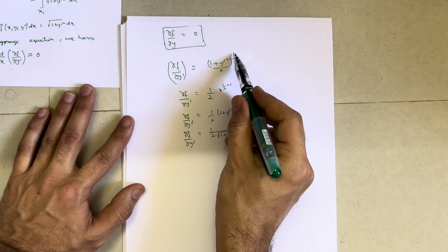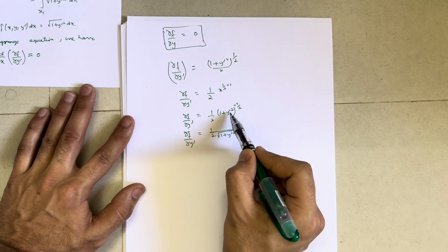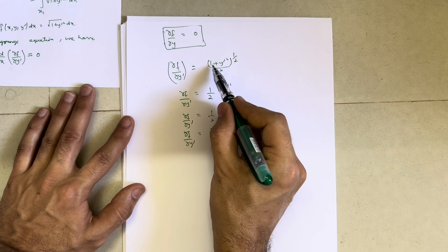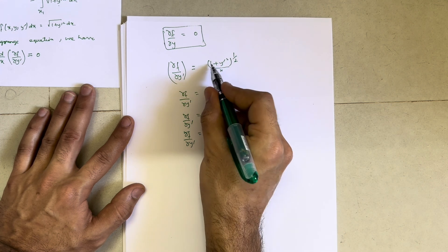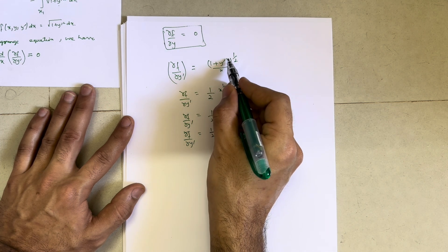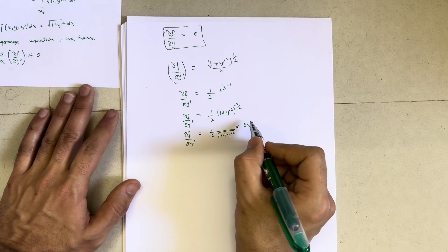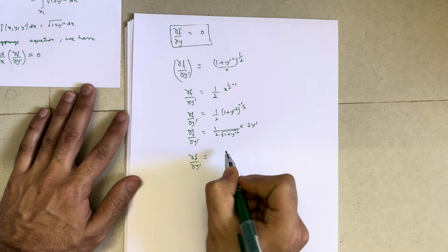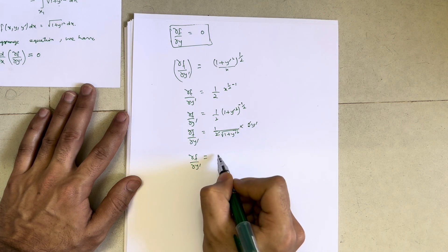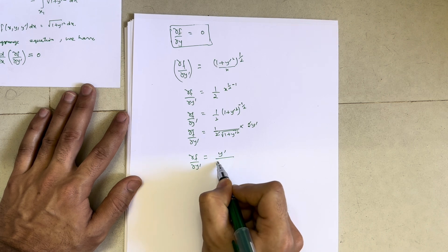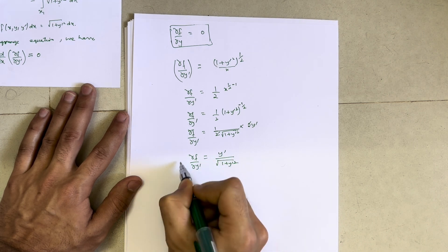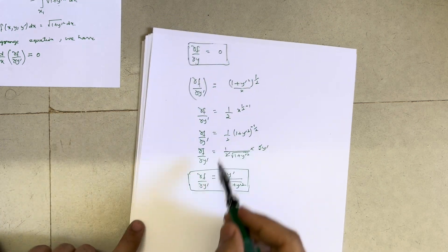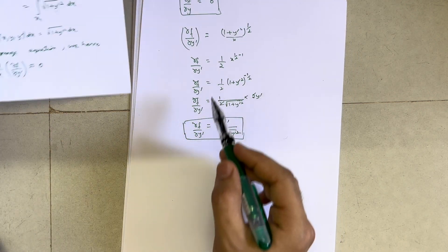Continuing the differentiation: the internal derivative of (1 + y'²) with respect to y' is 2y'. So ∂f/∂y' = (1/2)(1 + y'²)^(−1/2) × 2y', giving ∂f/∂y' = y' / √(1 + y'²). We have now calculated both ∂f/∂y and ∂f/∂y'.